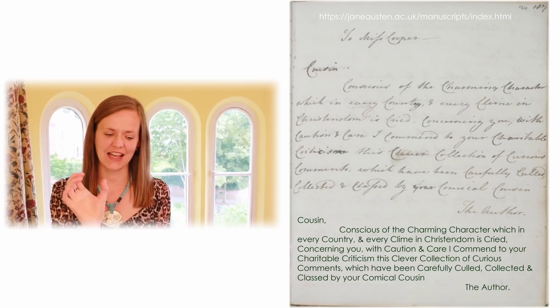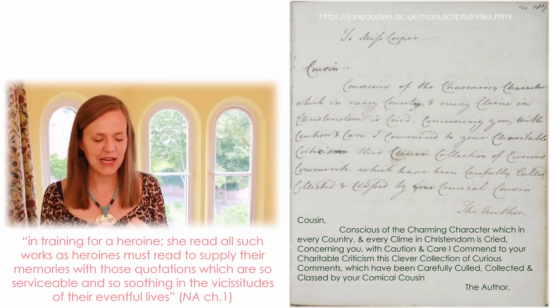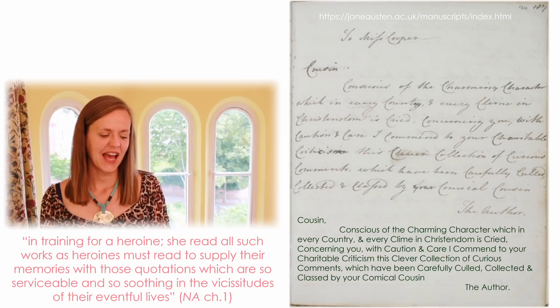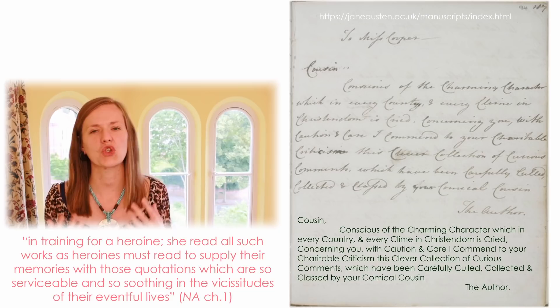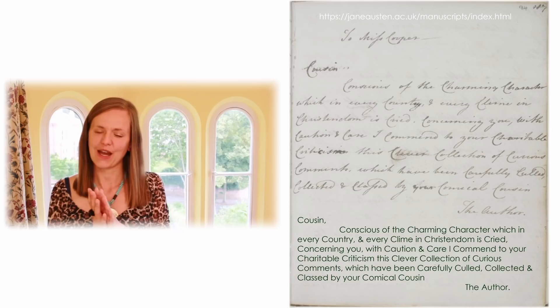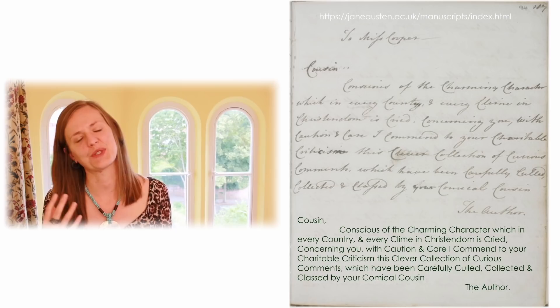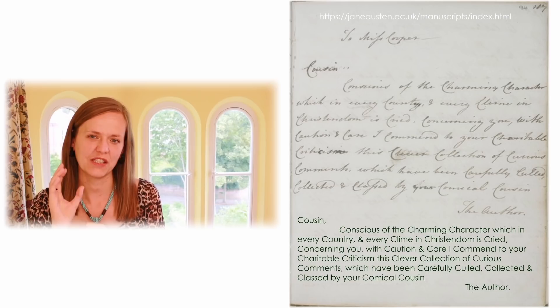In Northanger Abbey, in the very opening chapter, Catherine Morland, the heroine, is described as being "in training for a heroine": she "read all such works as heroines must read to supply their memories with those quotations which are so serviceable and so soothing in the vicissitudes of their eventful lives." Here in the dedication, I think we see a young woman in training for an author. Jane Austen is working up and building on her writerly skills — these kinds of exercises strengthen the linguistic muscles of the mind. Setting yourself a task like how long a sentence can you write using primarily words that begin with C, and then fulfilling it.